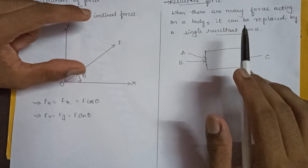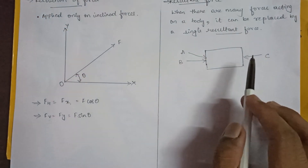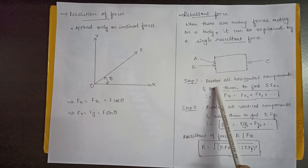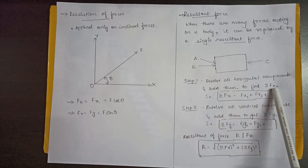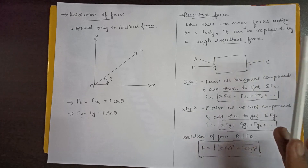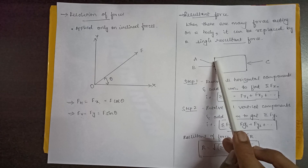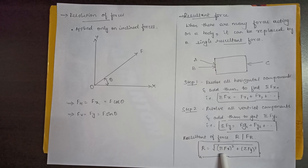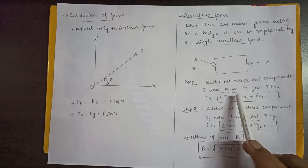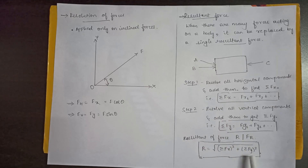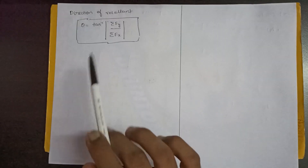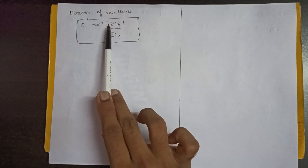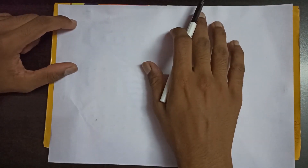When there are many forces acting on a body, they can be replaced by a single force called the resultant force. The first step is to resolve all horizontal components and find the summation of Fx; the second step is to find the summation of Fy. The resultant R is given by R = √(ΣFx² + ΣFy²). You substitute the summation values, square them, add them, and find the square root. The direction or angle of the resultant is given by θ = tan⁻¹(ΣFy / ΣFx).